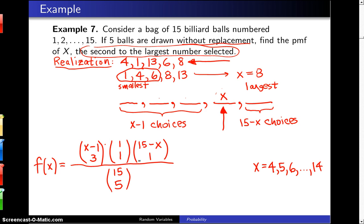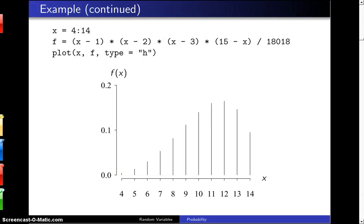Now when I do a little bit of algebra, when I write out these combinations, it turns out in the R code here, X will run from 4 up through 14, and that is the support. And F will be X minus 1 times X minus 2 times X minus 3 times 15 minus X divided by 18,018. And when you plot that probability mass function,